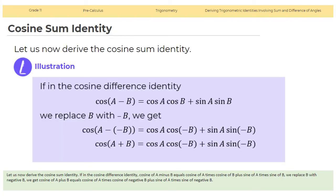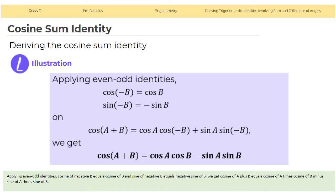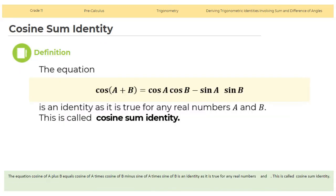Now let us derive the cosine sum identity. In the cosine difference identity, cosine(a minus b) equals cosine a times cosine b plus sine a times sine b, we replace b with negative b. We get cosine(a plus b) equals cosine a times cosine(negative b) plus sine a times sine(negative b). Applying even-odd identities, cosine(negative b) equals cosine b and sine(negative b) equals negative sine b. We get cosine(a plus b) equals cosine a times cosine b minus sine a times sine b. This is called the cosine sum identity, and it is true for any real numbers a and b.